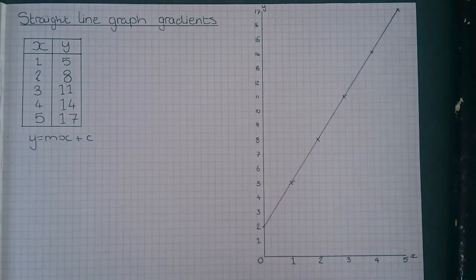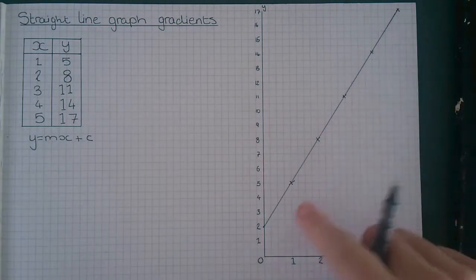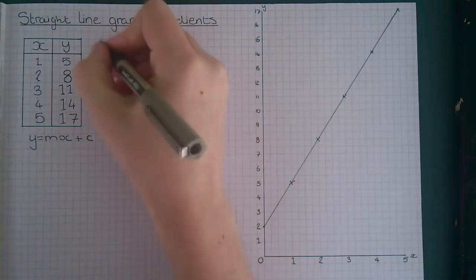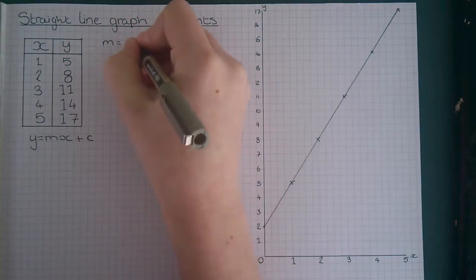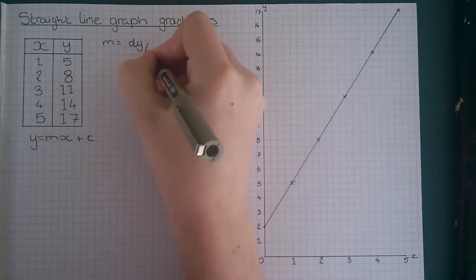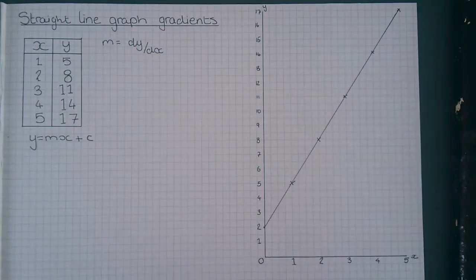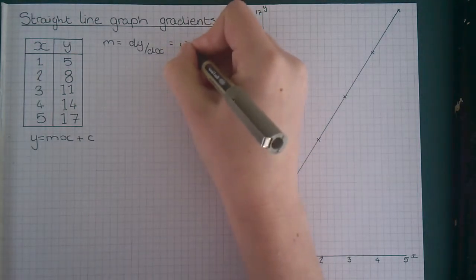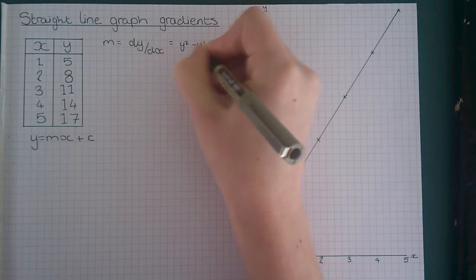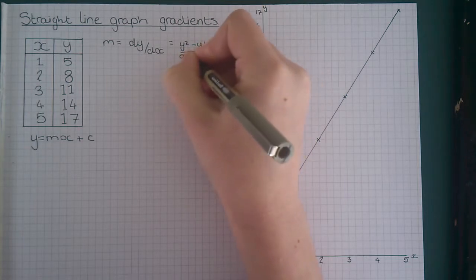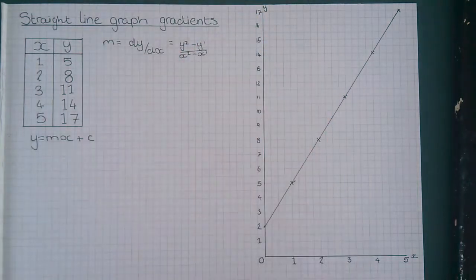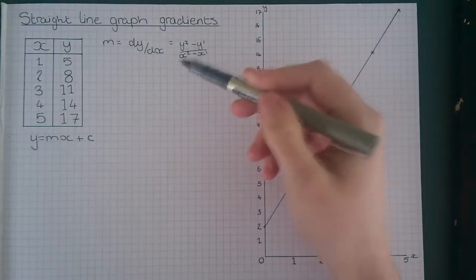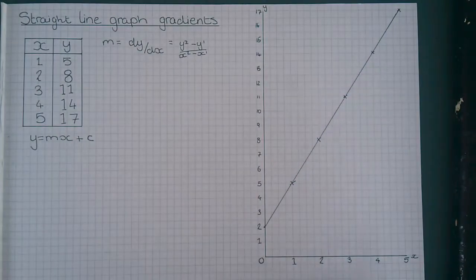m is the gradient and c is the intercept with the y-axis. To work out the gradient you need to understand that the gradient is the change in y divided by the change in x, which is written as dy by dx, where the d means change in. We work this out using the equation y2 minus y1 divided by x2 minus x1. y2 and y1 are points from the y-axis, x2 and x1 are corresponding points from the x-axis.